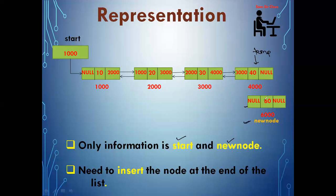To insert the new node at the end, temp's next should no longer be null — it should be 6000 (the address of the new node). That establishes one connection between temp and the new node, making the new node the last node. But since this is a doubly linked list, the new node must also store address 4000 in its previous part — so new_node->prev = temp.